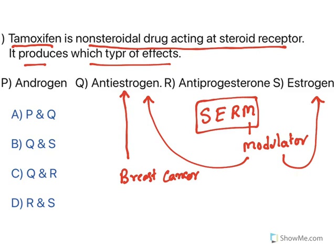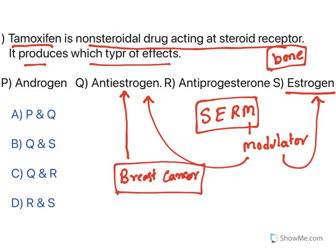These drugs act as anti-estrogen at breast tissue, whereas they retain agonistic activity of estrogen at bone and uterus. The advantage is they can be used selectively to treat breast cancer without causing side effects at bone and uterus. That is why they are called selective estrogen receptor modulators — anti-estrogen at one junction, estrogenic activity at another. The answer is both these actions, option Q and S — option B is correct.